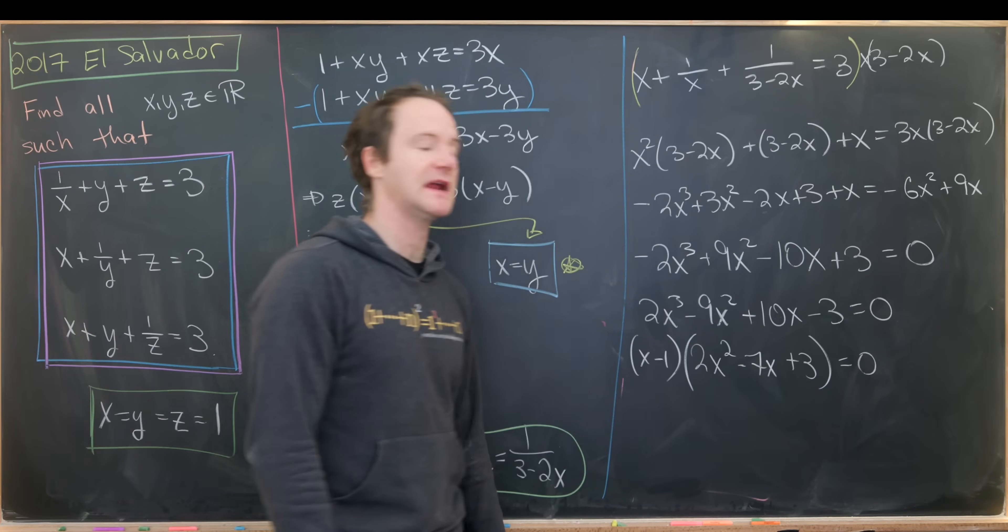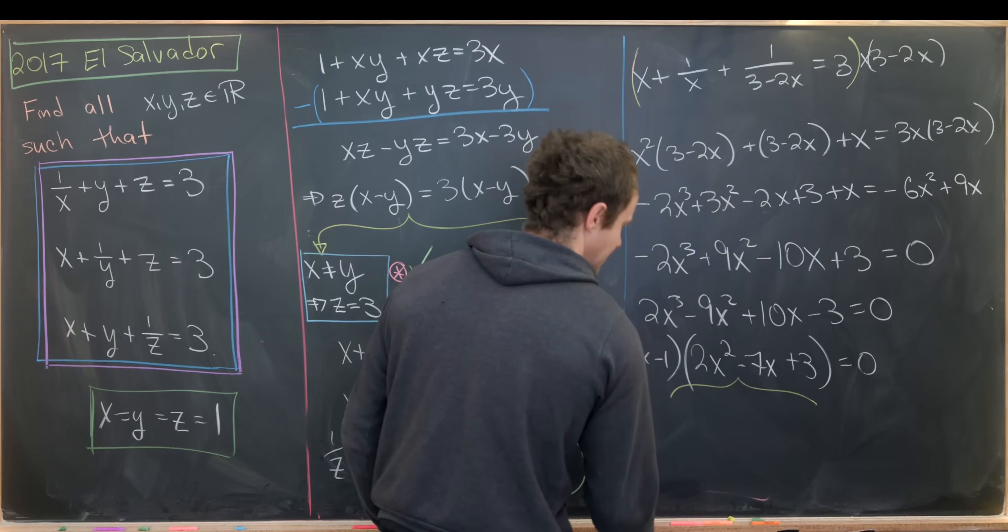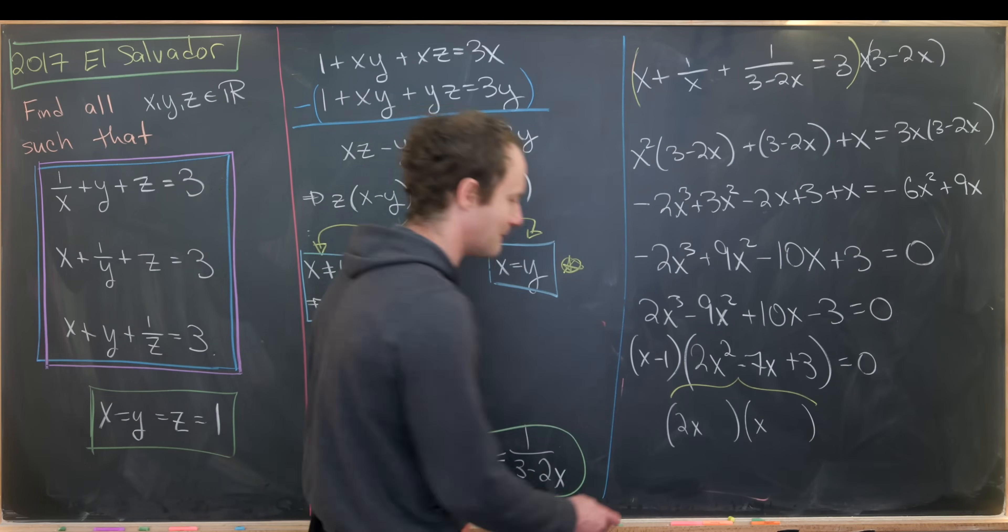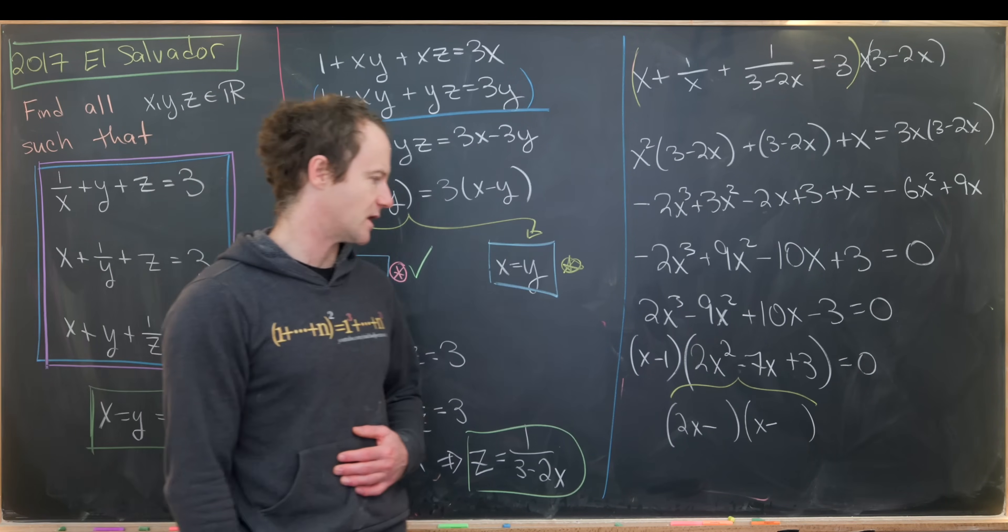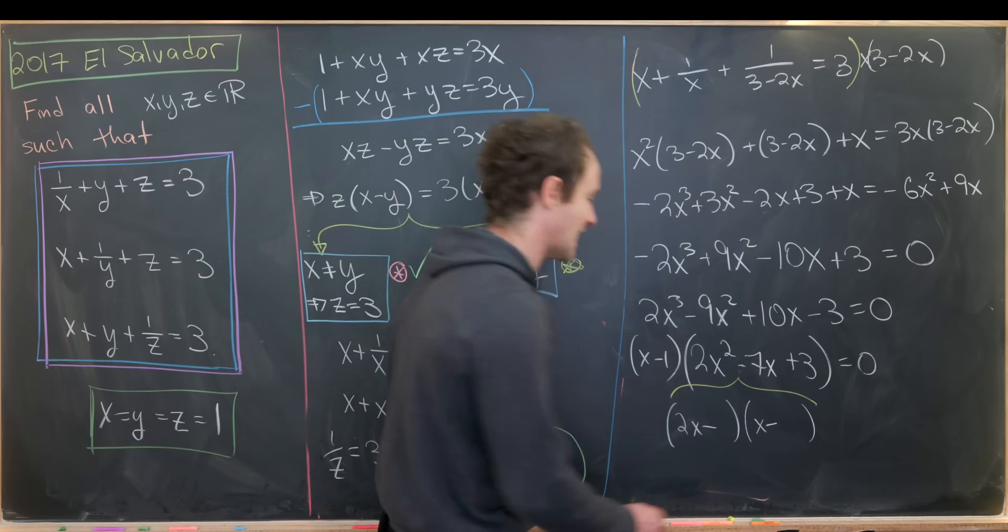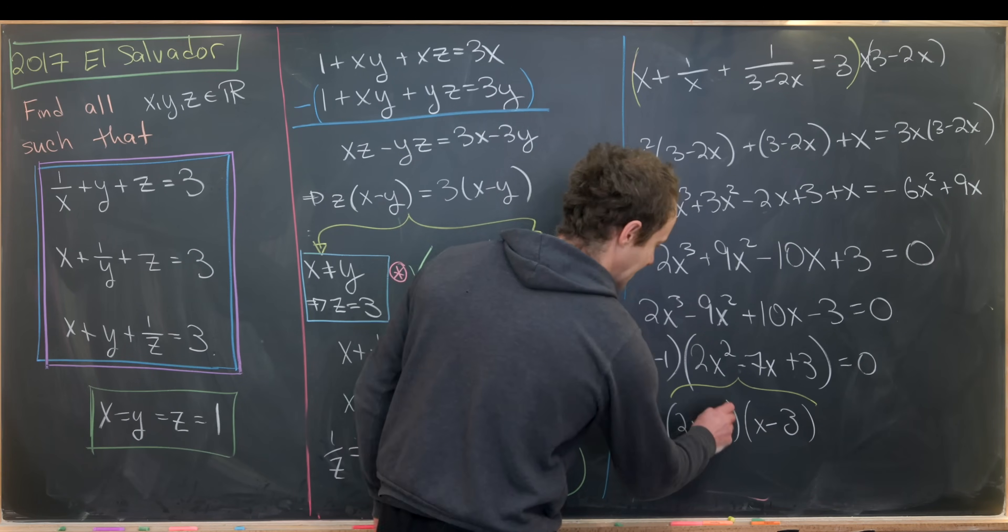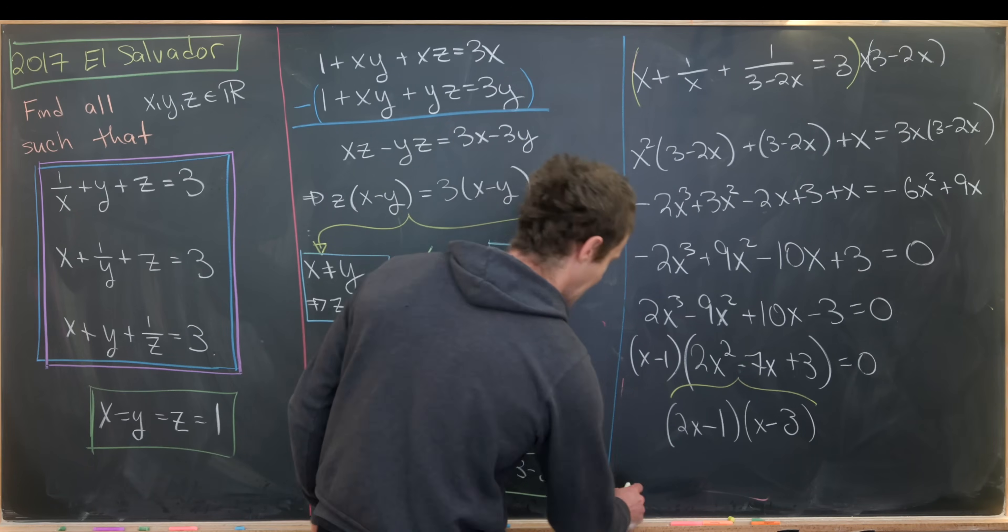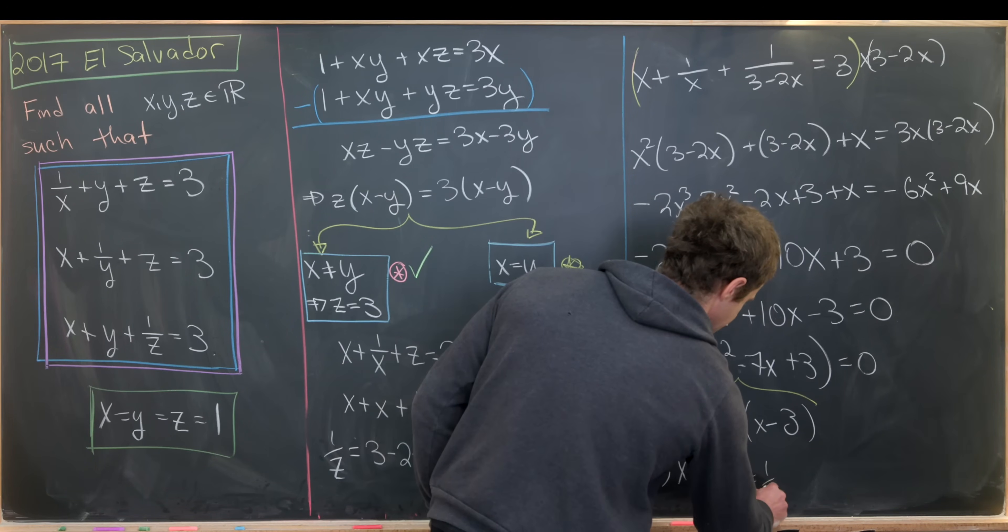Now we'd like to look at this remaining quadratic polynomial. Maybe that thing factors. If it factors, it factors like 2x with something, and then x with something. We'll need a minus sign in both of these spots. Maybe we could have a 3 here, that'll give us negative 6x, and then we can have a minus 1 here, that'll give us negative 7x. So that tells us we have three possibilities for x: x equals 1, x equals 3, or x equals 1 half.